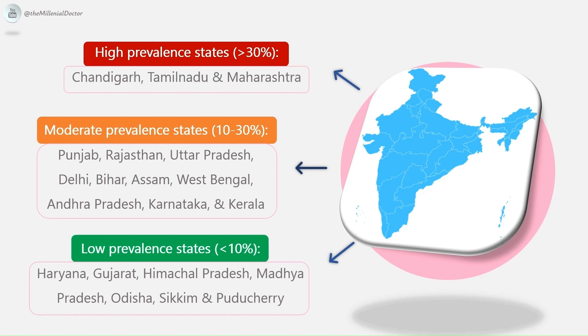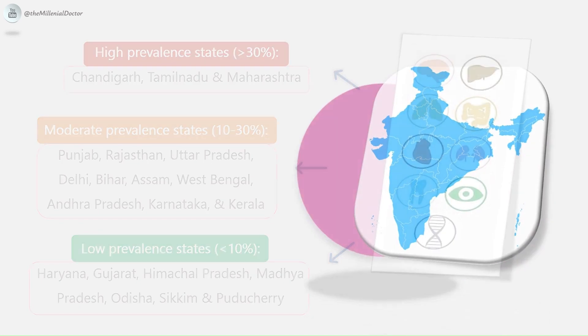The third is low prevalence states, accounting for less than 10% of all infections: Haryana, Gujarat, Himachal Pradesh, Madhya Pradesh, Odisha, Sikkim, and Puducherry.